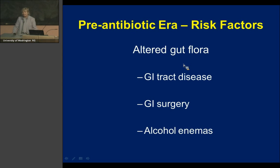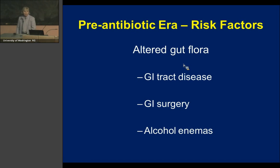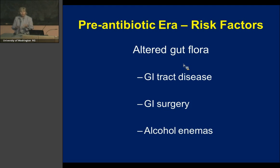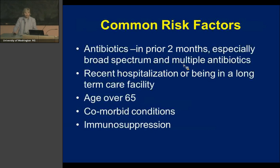Obviously they didn't have antibiotics in 1893, so why did she have pseudomembranous colitis? I think because she had a very abnormal microbiome in her colon. She had GI tract disease, which would change the flora; she had GI tract surgery; and the alcohol enemas presumably had a profound effect on the normal microbiota.